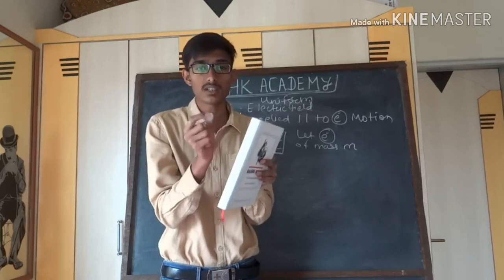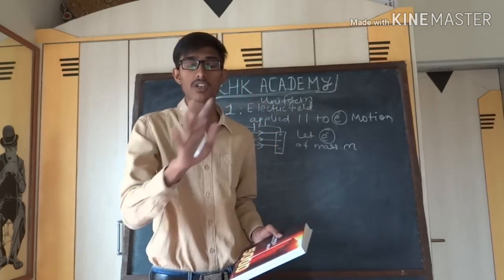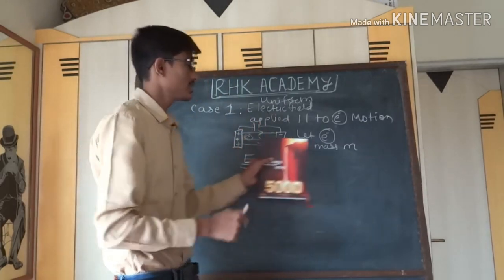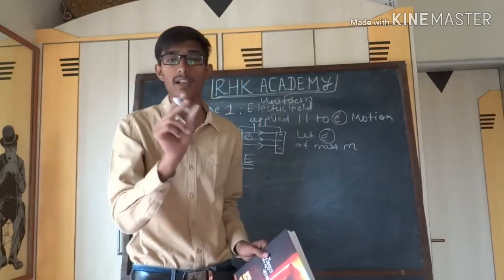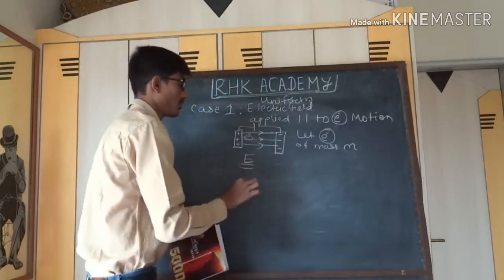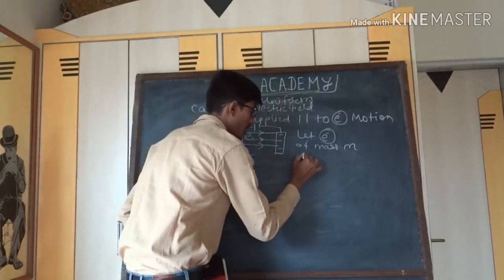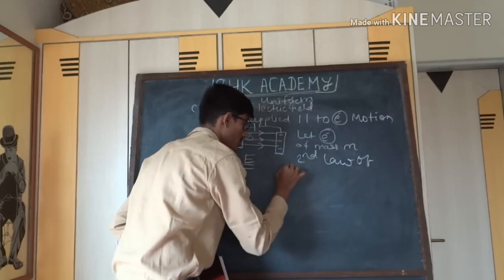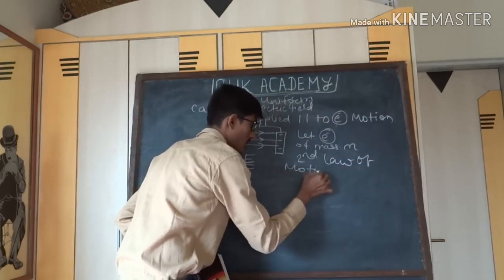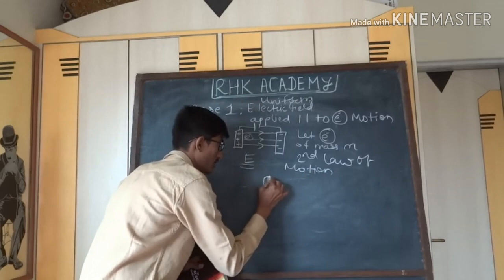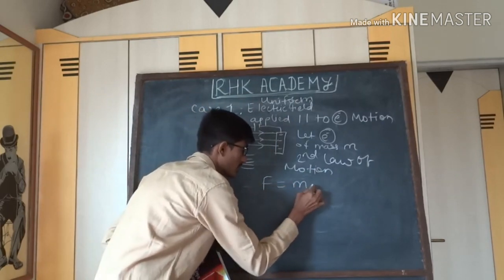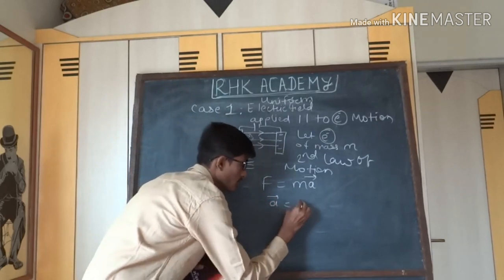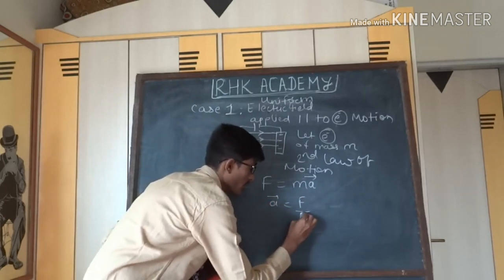The electron consists of some amount of charge but does not have any other structure or properties. Since we are considering it as a point mass, we can apply Newton's laws of motion. We will apply the second law of motion: F equals mass times acceleration, so acceleration equals force divided by mass.